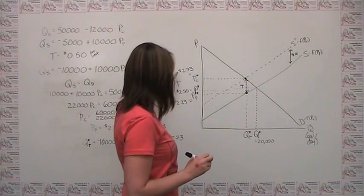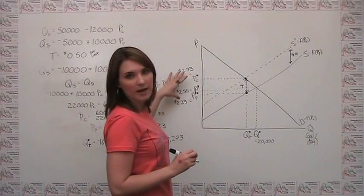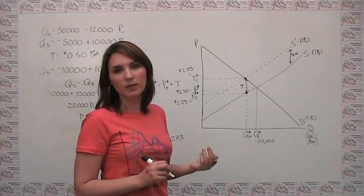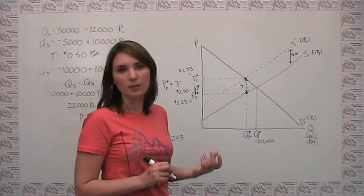Notice that the two tax incidences together add up to the $0.50 tax, but neither the consumer nor the producer is bearing the full $0.50 impact.